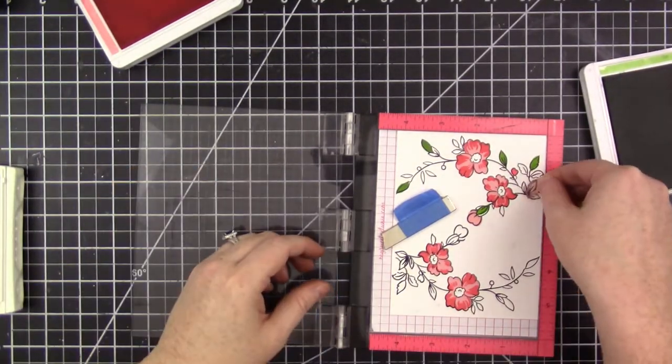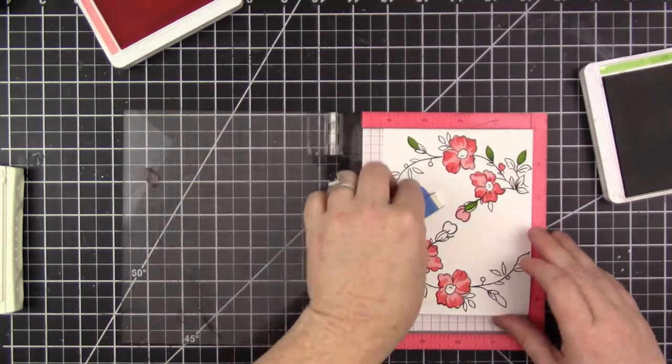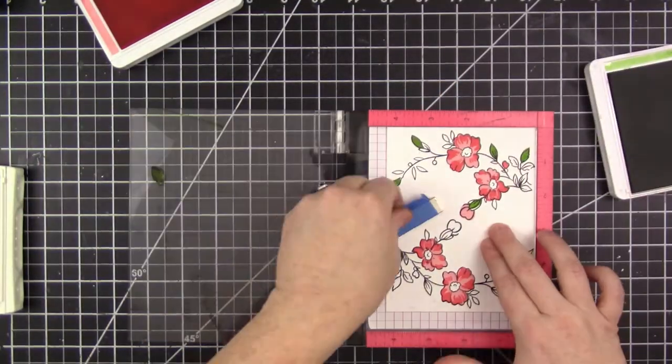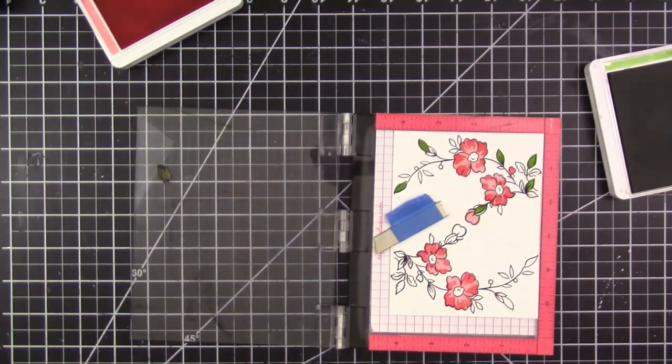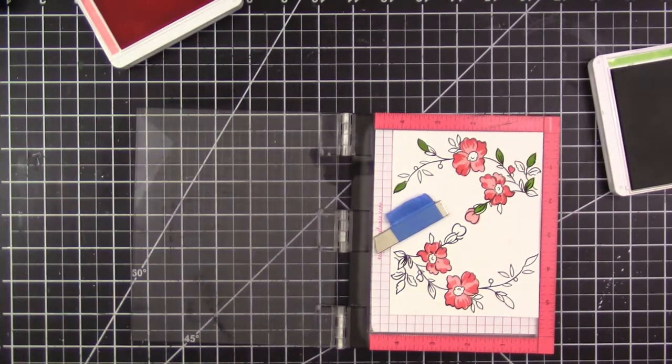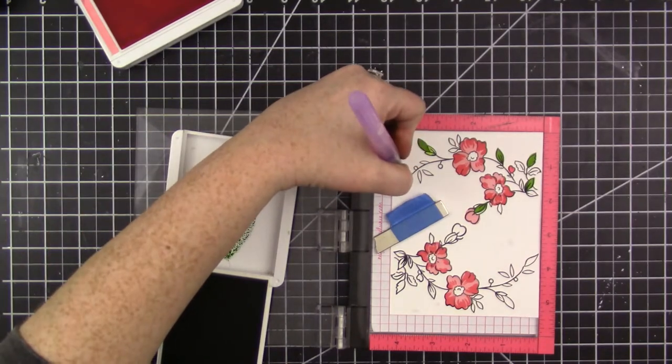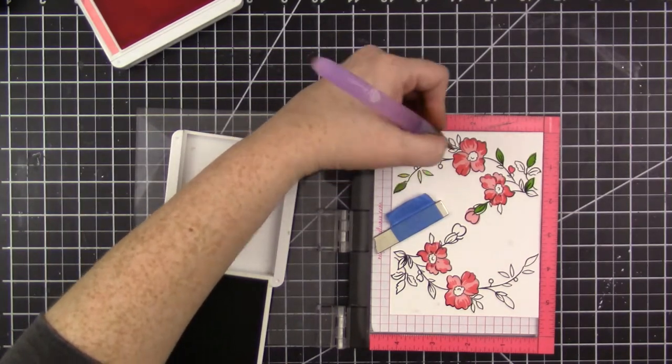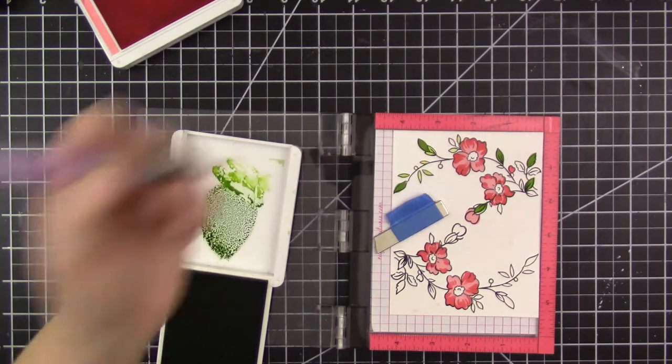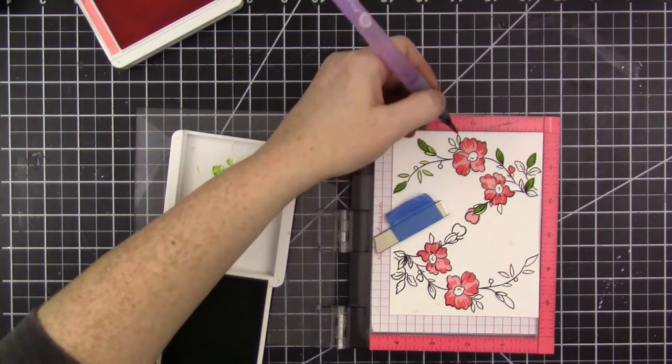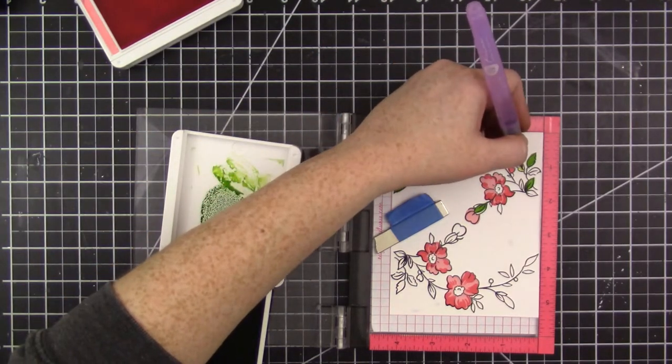I'll take some of the excess ink from the lid of the ink pad and lightly apply it to areas of the image. I'm not using watercolor paper, so I don't apply too much water in one area, and the paper holds up nicely.